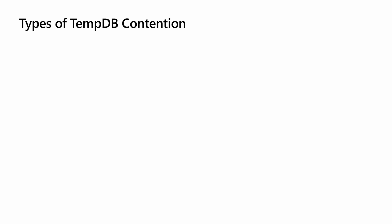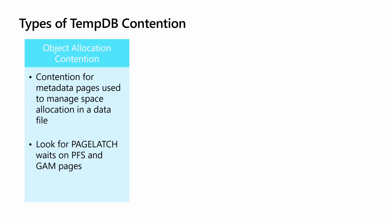Because of this, many users face contention in TempDB, and that generally breaks down into three different categories. The first is object allocation contention, which is what happens when we're allocating new space for objects in TempDB or deallocating space from an object. This shows up as page latch waits on PFS and GAM pages — these are special pages used inside the database file to track space allocation. So you would see different threads waiting on a page latch wait type with a wait resource of a PFS or a GAM page.